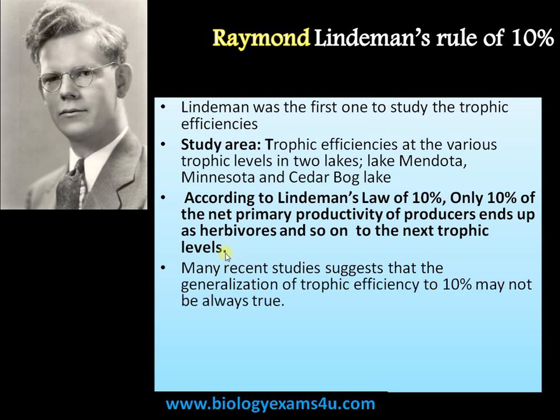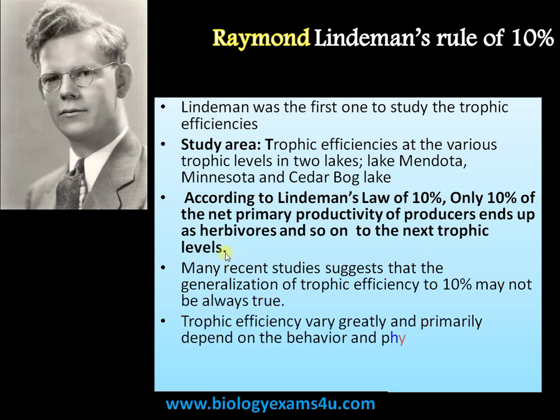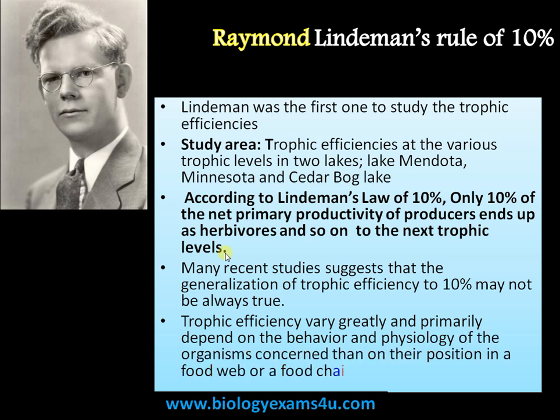Many recent studies suggest that this may not always be true, and that trophic efficiency or energy transfer efficiency can vary greatly. It primarily depends upon the behavior of the organisms involved rather than their position in the food web or food chain. Still, it is a rule that is applicable in many cases.